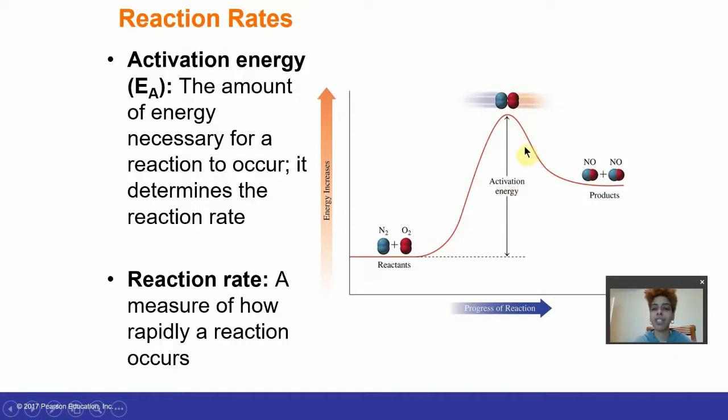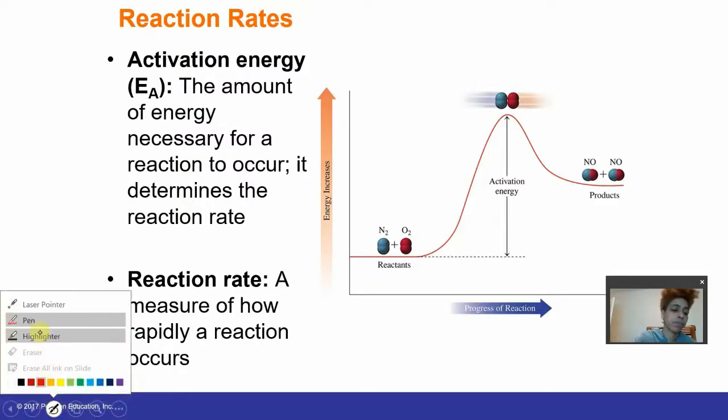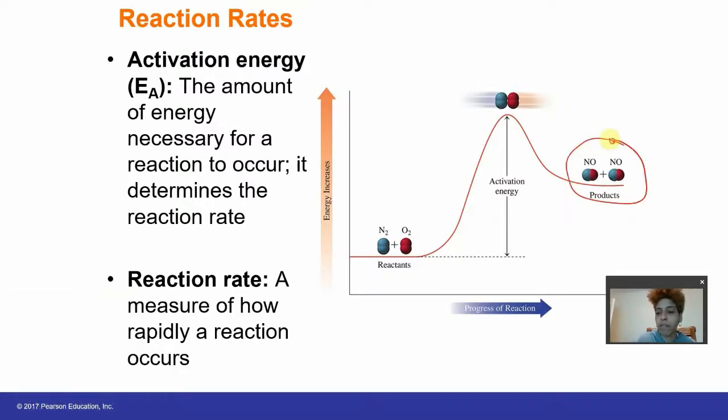So if I have a low activation energy, then I'd only have to put in a little bit of energy into the reaction for the reaction to move forward. This is an endothermic reaction and the energy of our products is higher than the energy of our reactants.